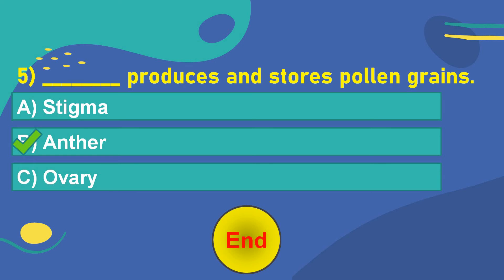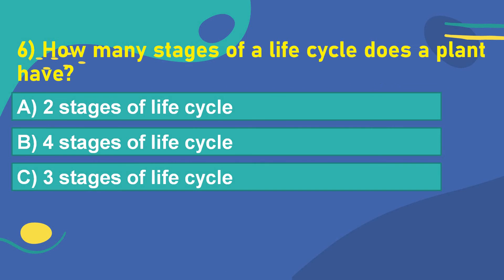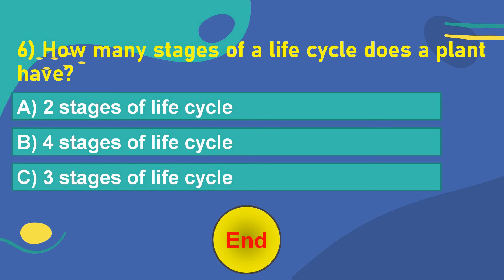Let's move on to the next question. The sixth question is: How many stages of a life cycle does a plant have? Option A: 2 stages of life cycle. Option B: 4 stages of life cycle. Option C: 3 stages of life cycle. Think of the answer. Your time starts now. 5, 4, 3, 2, 1, 0. OK. The correct answer is Option C: 3 stages of life cycle.